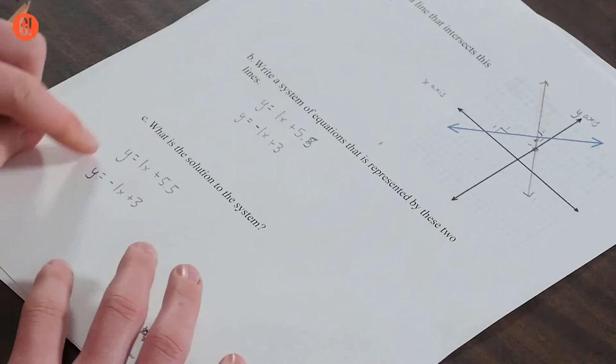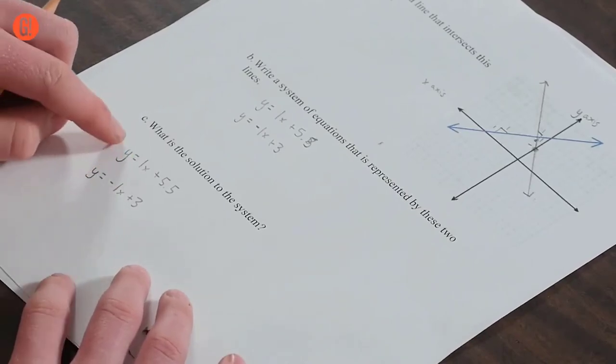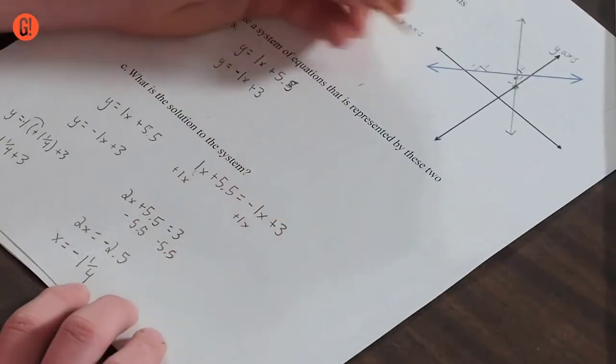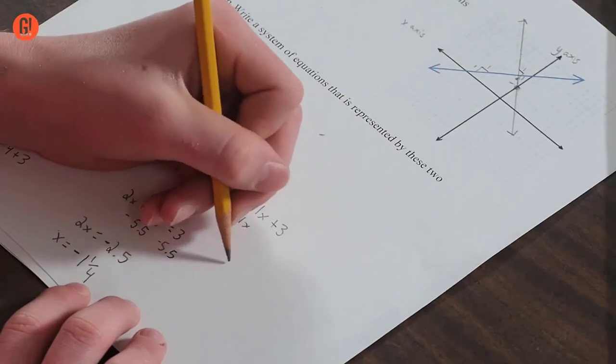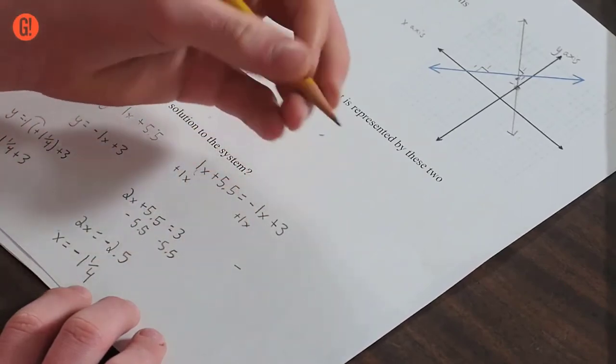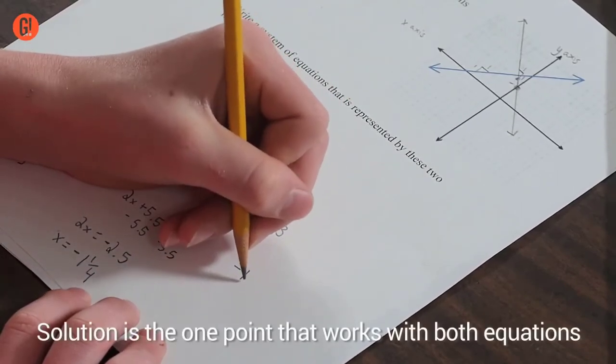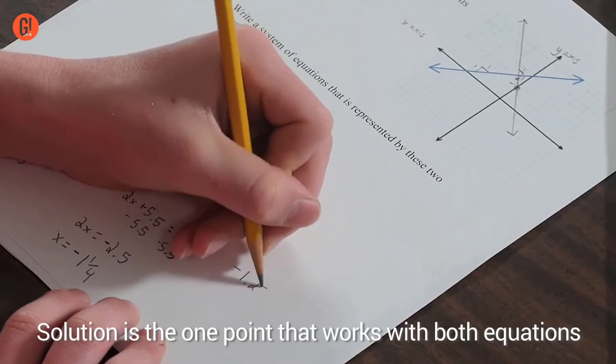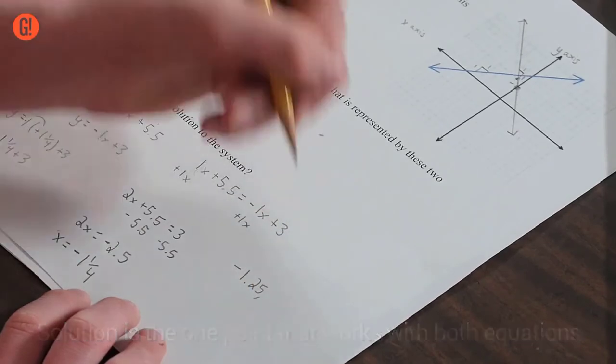So these are my system equations, and now I have to solve them. I can put them equal to each other because they both have y. These lines intersect at negative one point two five and four point two five.